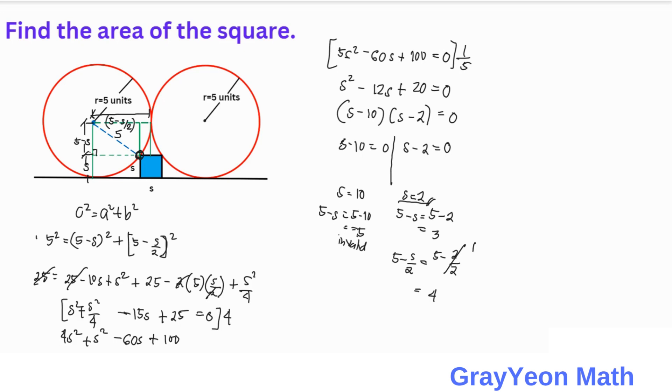We are looking for the area of the square. Area equals S squared. Area equals 2 squared, so area equals 4 square units. That is our answer.